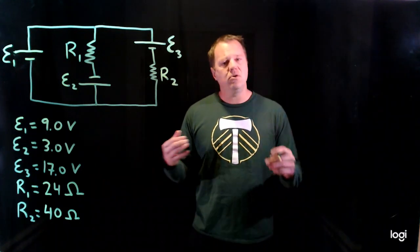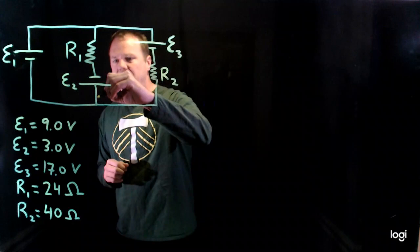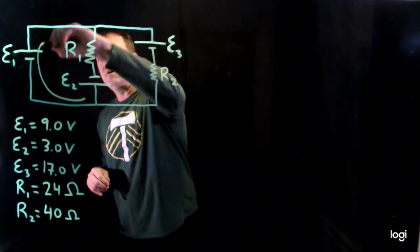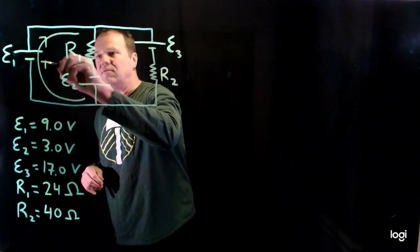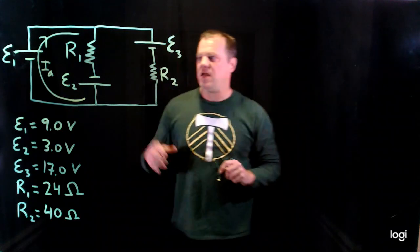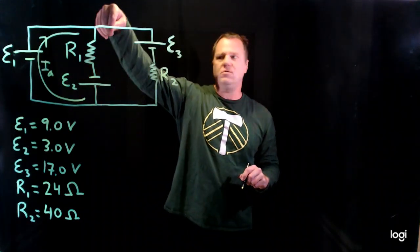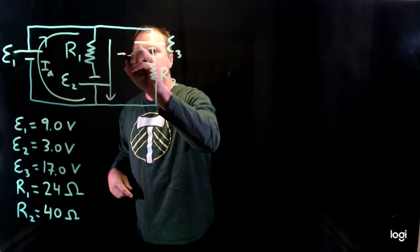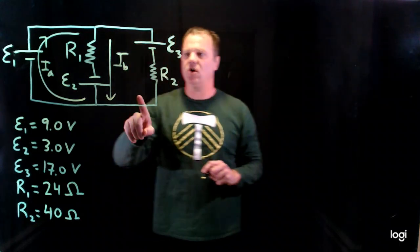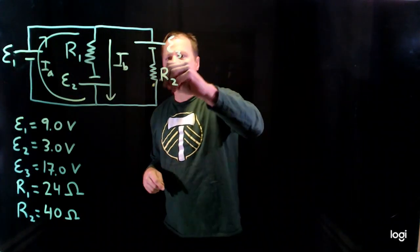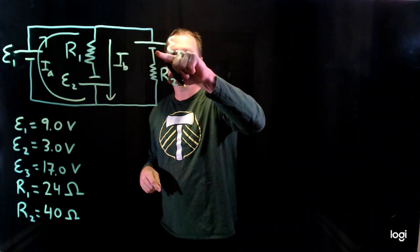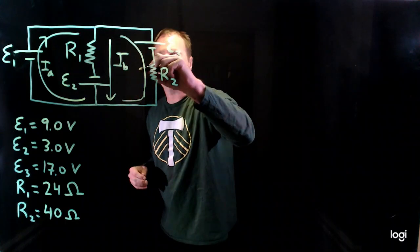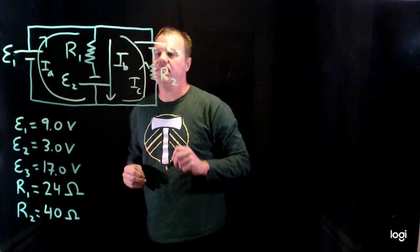That's not always going to be true, but typically that's what happens. I'm going to call the current in this first branch current A, and draw a direction for it. The current through the middle branch, which intuition suggests should go this way, will be current B. And then the current going through the right branch will be going from the negative to the positive inside the battery — going up — so that will be current C.